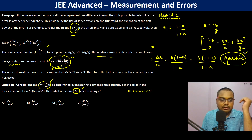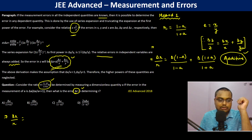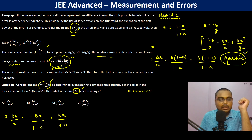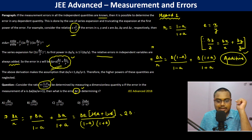Proceeding ahead, delta R by R becomes delta of (1 minus A): since 1 is constant it contributes 0, so this term becomes minus delta A divided by (1 minus A). The second term becomes plus delta A divided by (1 plus A), because errors are additive and we include a positive sign. Combining over a common denominator, this becomes delta A times (1 plus A plus 1 minus A) divided by (1 minus A)(1 plus A), which gives 2 delta A divided by (1 minus A)(1 plus A).